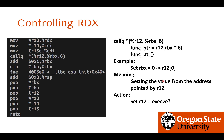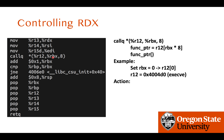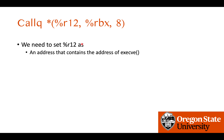We might try setting r12 as the address of execve, but that won't work. If we dereference the execve address, we'd get some raw byte value like 0xb5a25ff — a non-existent function address — causing a segmentation fault. Instead of setting r12 as the address of execve, we need to set r12 as the address that contains the address of execve in memory.